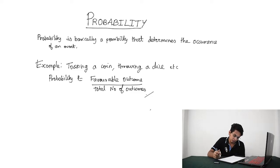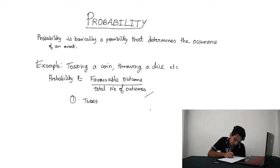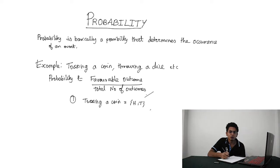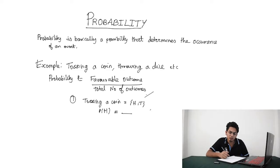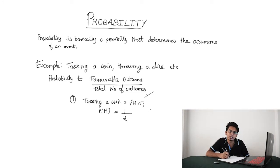Now let us take a simple example. The example I will be taking is tossing of a coin. Tossing a coin has two outcomes, that is either head or tail. Now let's calculate the probability of head. Since there are two outcomes, the total number of outcomes is 2 — the denominator is 2 and the numerator is 1. So the probability of getting head is 1 by 2, that is 0.5. Similarly, the probability of getting tail is 0.5.